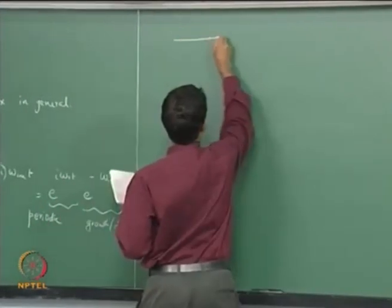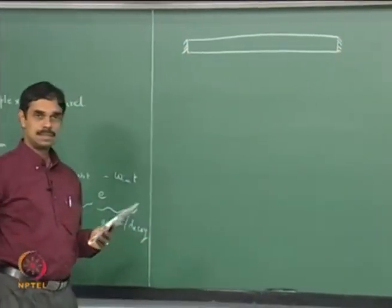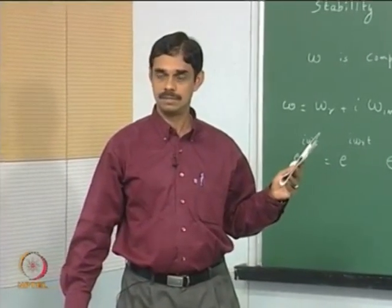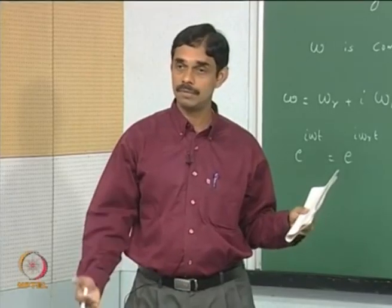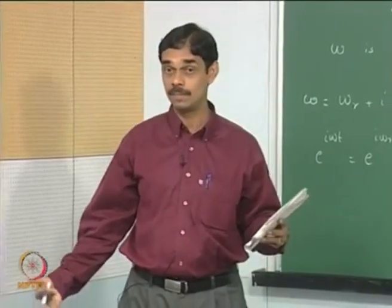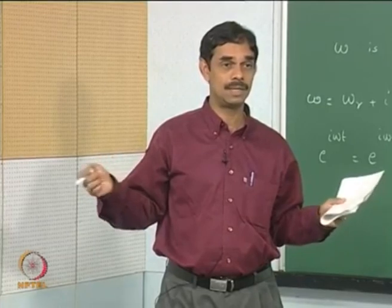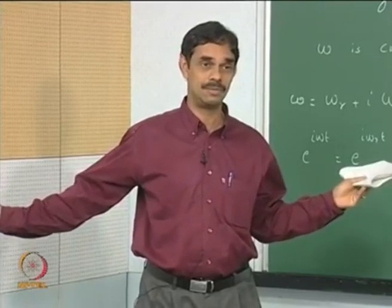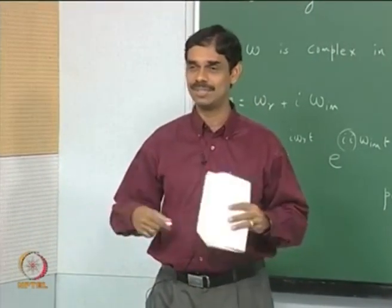We looked at the problem of a simple pipe closed at both ends. We got real eigenvalues — no growth or decay. The eigenvalues for this system are n·λ/2, so frequencies go like N·c/(2L), which is a purely real number. That means if you set up oscillations in the pipe and then turn off the loudspeaker, the oscillations would continue forever — in reality there are always losses.